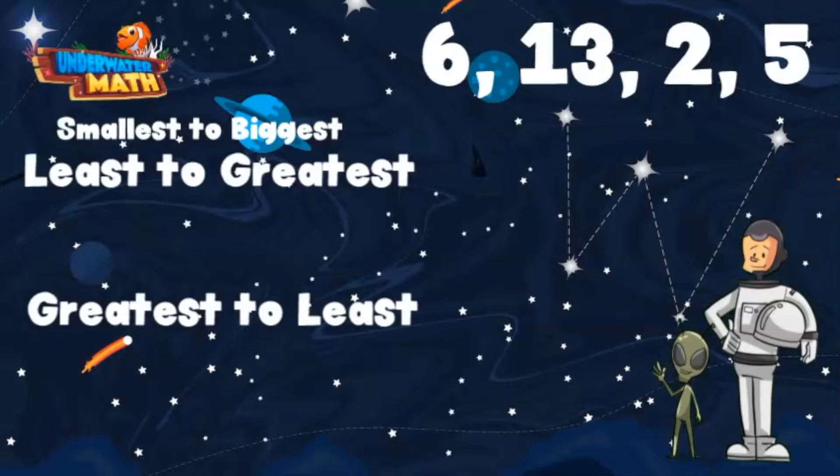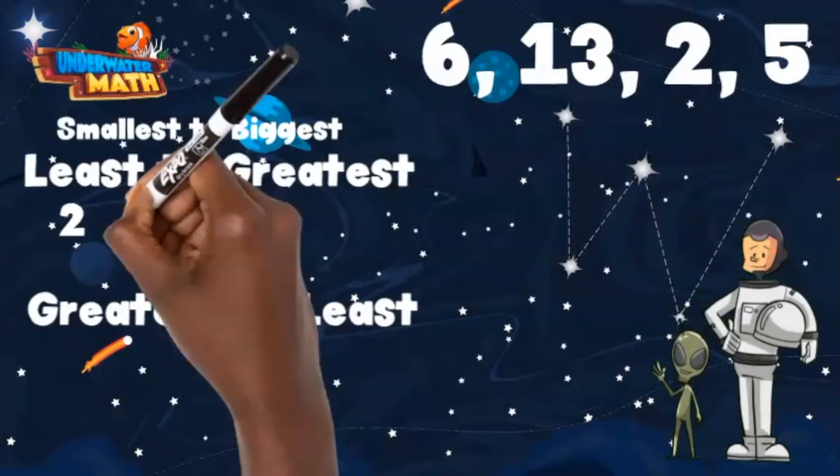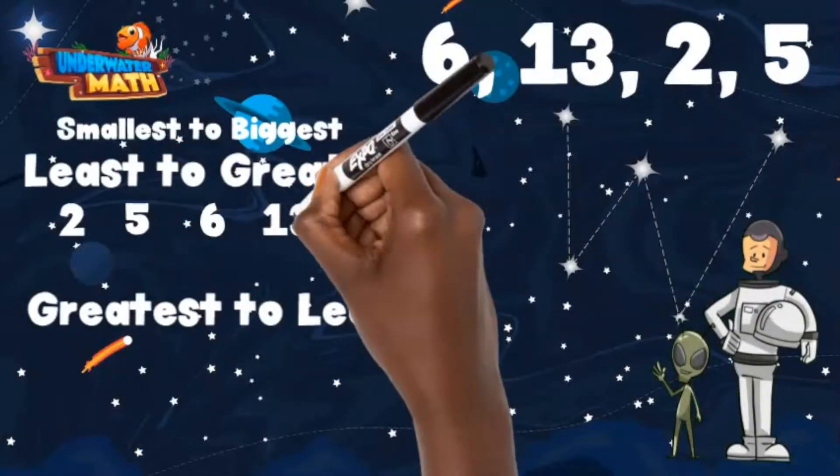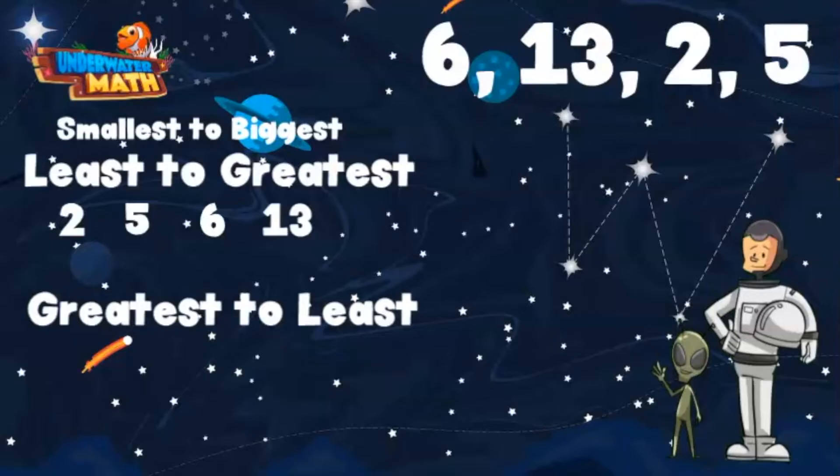We would start with the smallest number 2. The next smallest number is 5, then 6, and we end with our largest number 13. These are now in order from least to greatest.